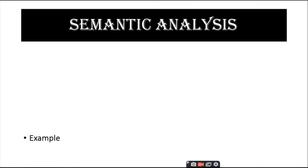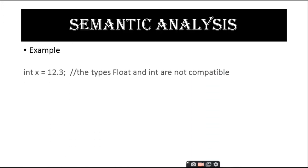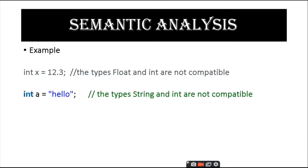In semantic analysis, for example, int x = 12.3 — since 12.3 is a floating-point number, it cannot be stored in an integer, so int is not compatible with float. Another example: int = "hello", where hello is a string and cannot be stored in an integer. Both examples generate semantic errors.